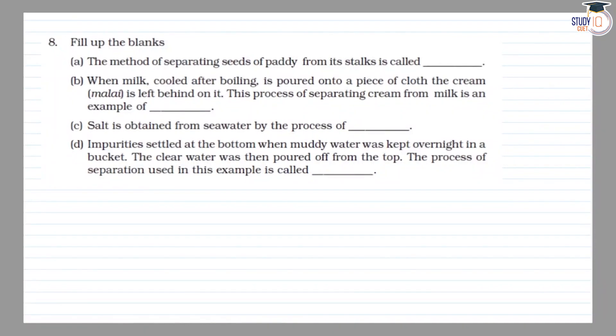Last 6 NCERT Chapter 5, Question 8: Fill up the blanks. (a) The method of separating seeds of paddy from its stalks is called dash. It's called threshing.